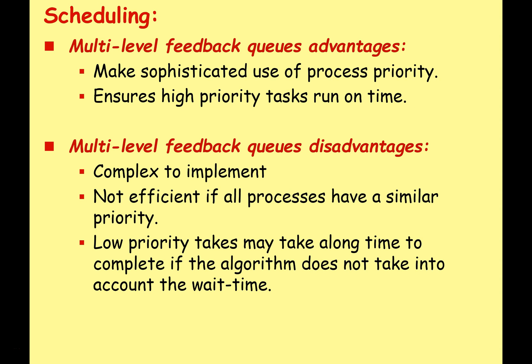However, multi-level feedback queues are more complex to implement. They're not efficient if all the processes have a similar priority, as they'd all join the same queue. Low-priority tasks may also take a long time to complete if the algorithm does not take into account wait time — you need the more complicated algorithm to recognize when a process has been waiting too long.